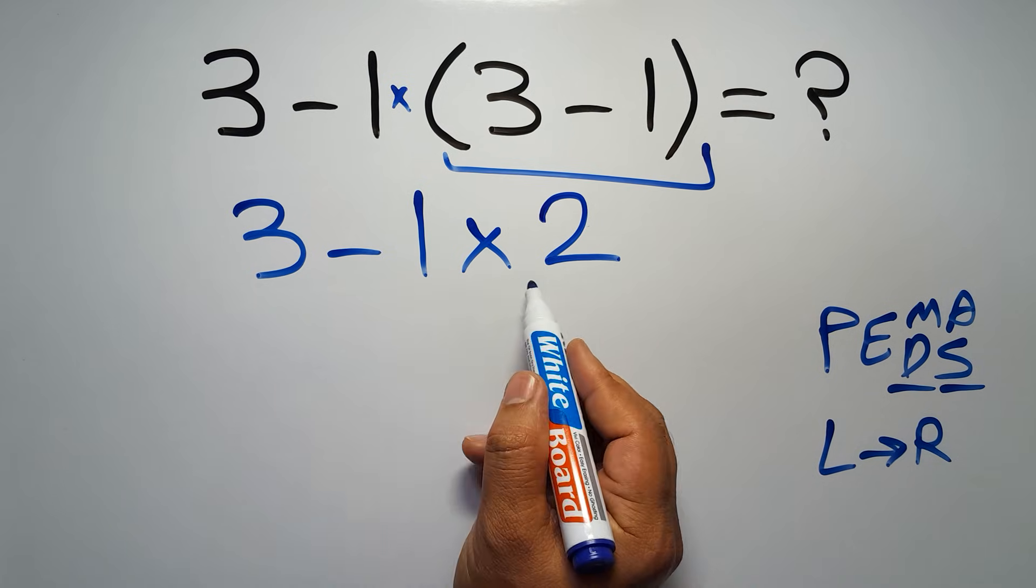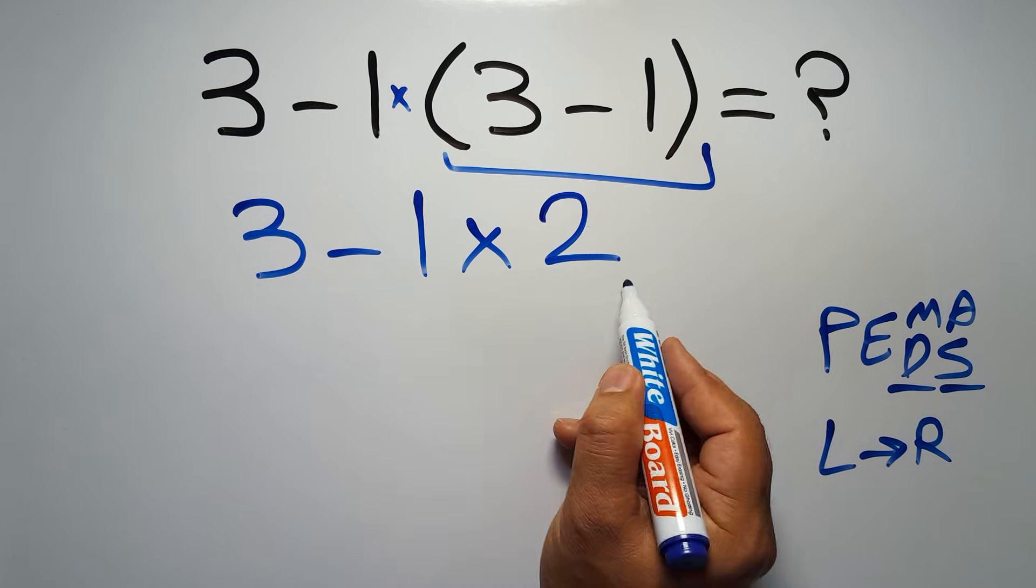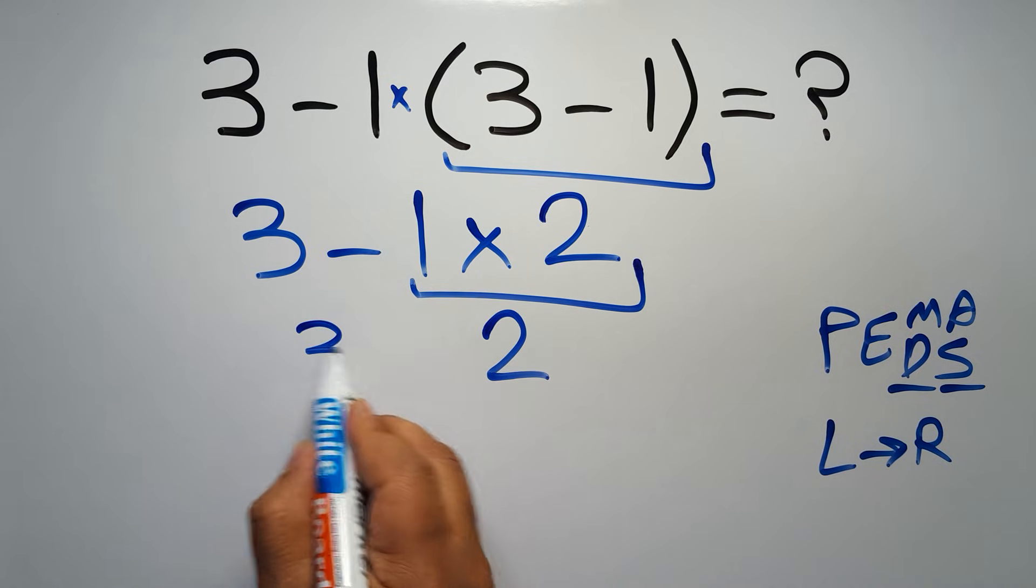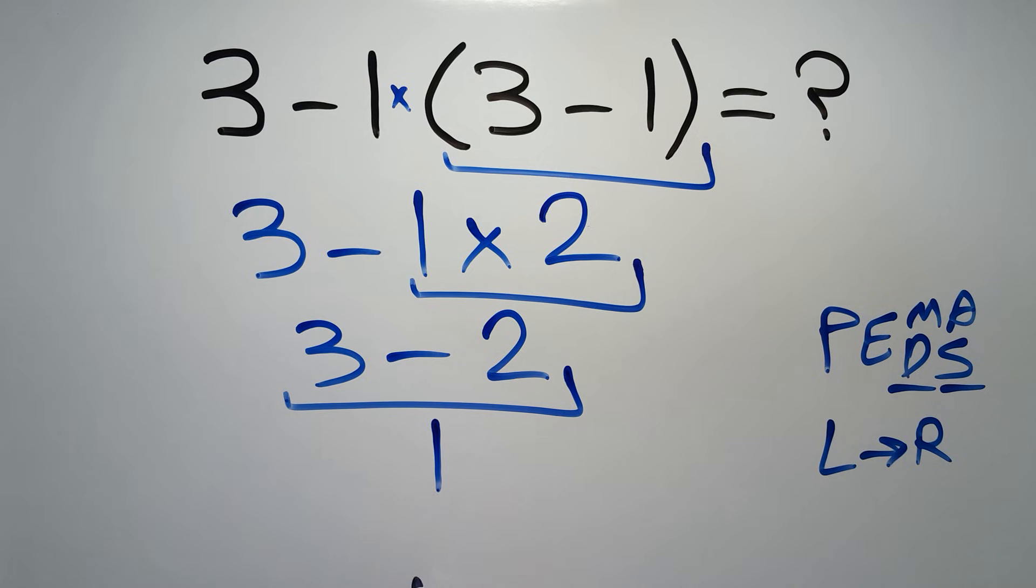So here first we have to do this multiplication. 1 times 2 is just 2, and 3 minus 2 gives us 1, and this is our final answer to this problem.